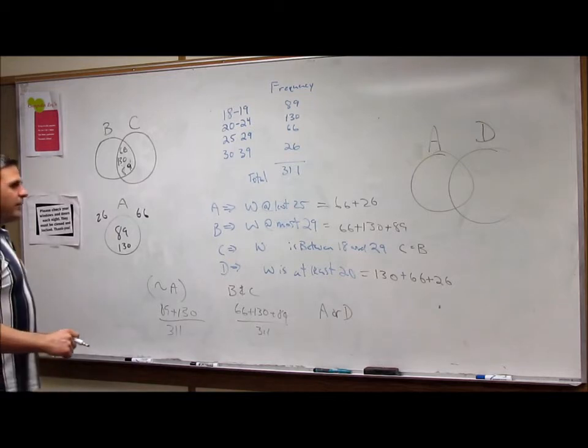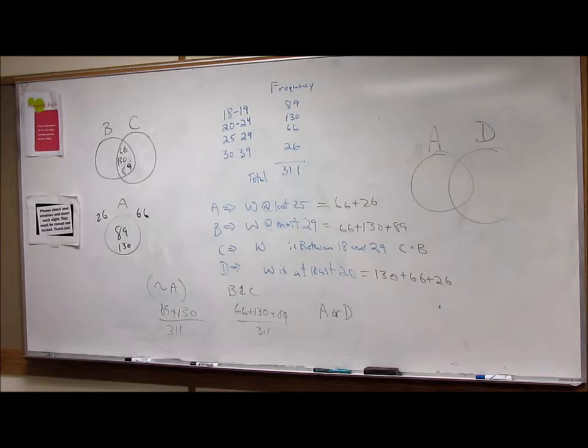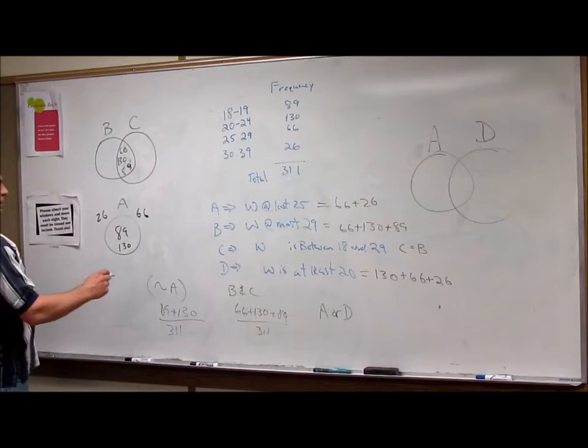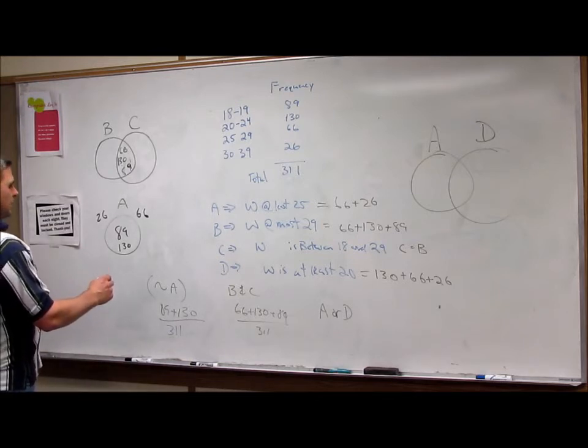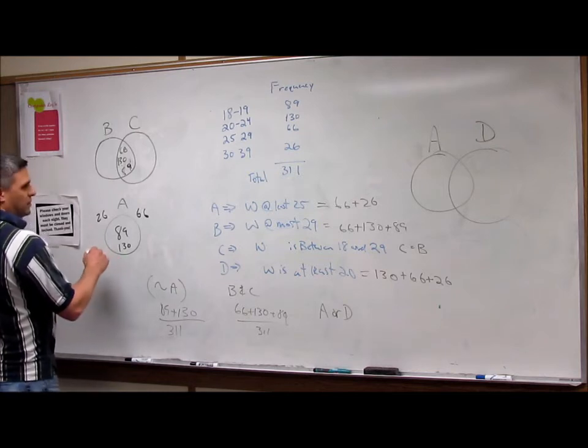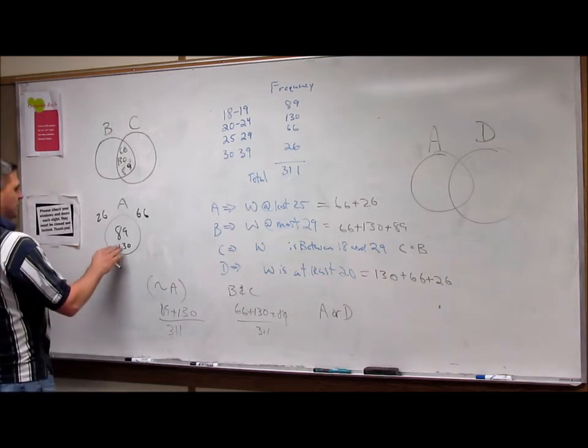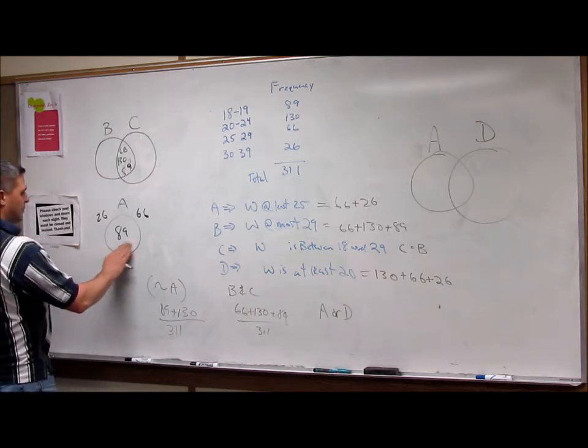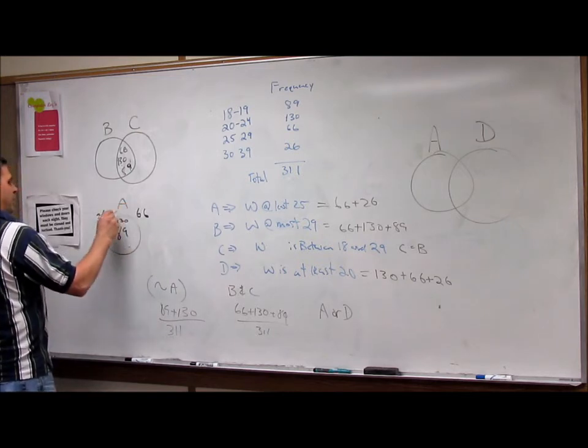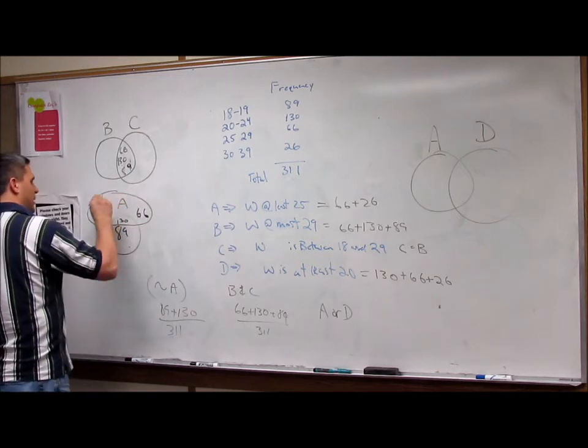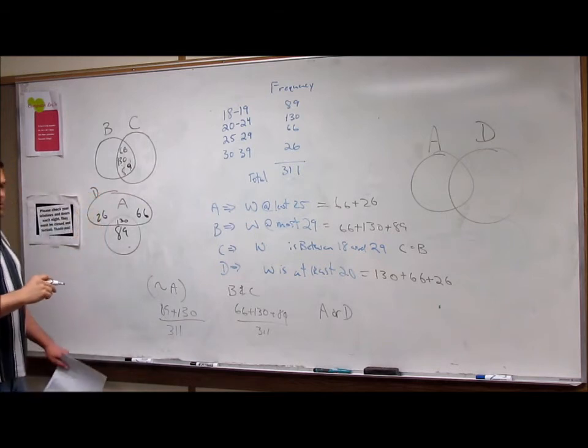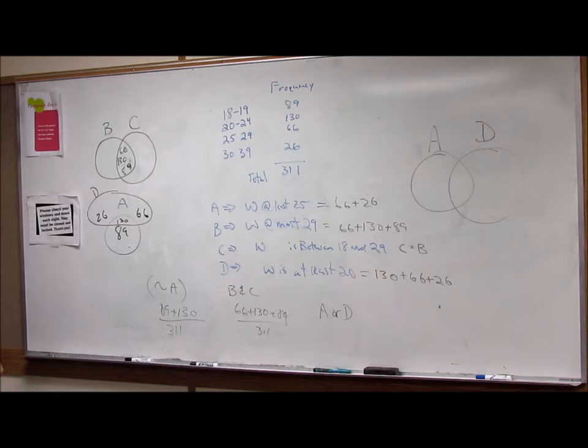And so if I were to circle something like a D, how about D? That would be a tough one. It's 130. Let me put 130 up here. So now if I wanted to do D, that would be D, right? So what's in D and A?